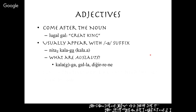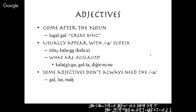Some adjectives don't always need the 'a.' You will often see 'gal' or 'tur' — gal means big, tur means small, maḫ means magnificent — that's the nice German 'lach' sound. So 'lugal-maḫ' is the magnificent king, 'lugal-tur' would be the small king. Notice these don't have the 'a' appended. So adjectives don't always require it, but they often have it.